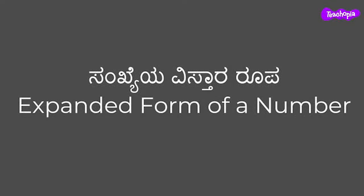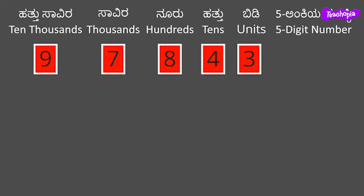Expanded form of a number. We create numbers to represent values by combining digits in the correct order. Adding the place value of each digit in the number to represent the number is called the expanded form of numbers. Let us understand the expanded form of a number using some examples.